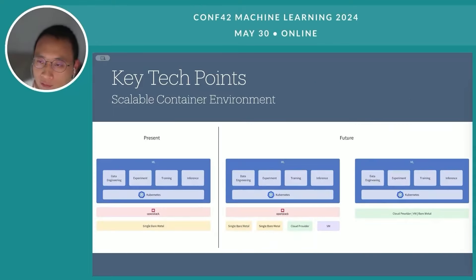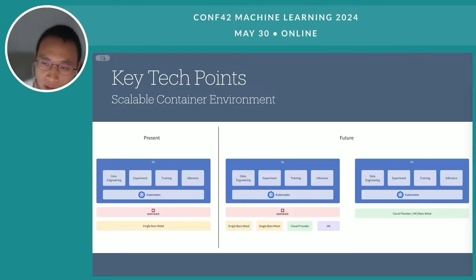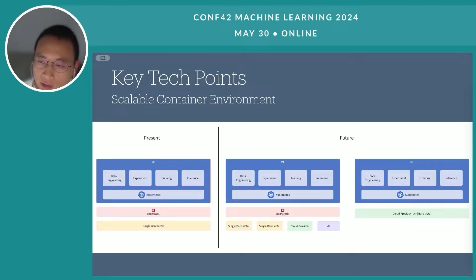This diagram illustrates the potential life cycle of a typical affordable machine learning platform. In the initial phase, OpenStack is used to support single machine setups and ensure compatibility with heterogeneous hardware. As the platform evolves, OpenStack continues to provide compatibility with more complex environments, including cloud infrastructure. In later stages, OpenStack can be seamlessly moved to other container environments directly, enhancing flexibility and scalability.